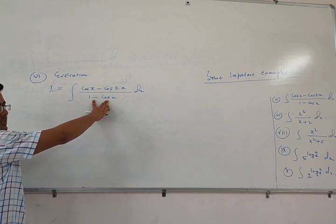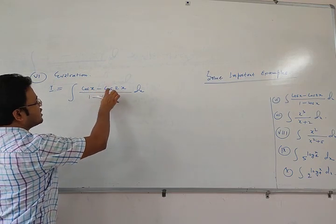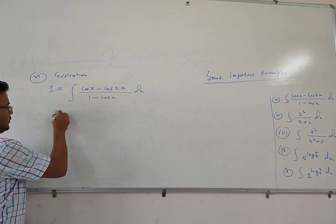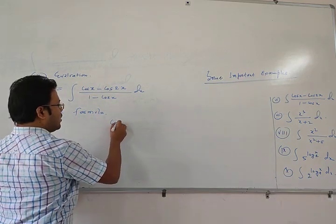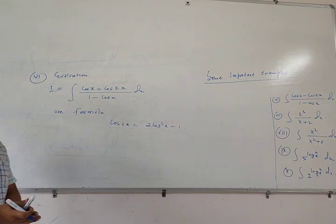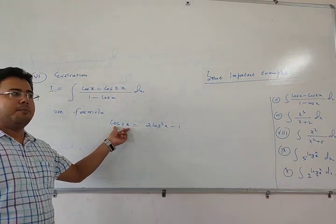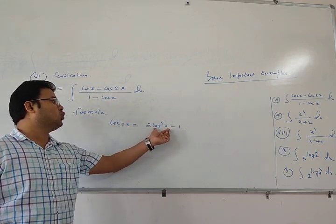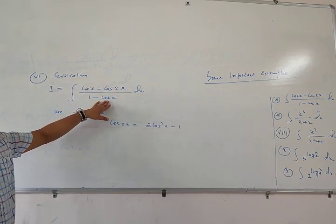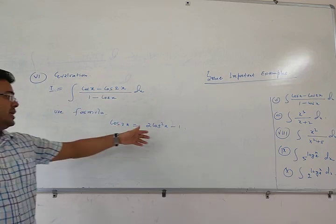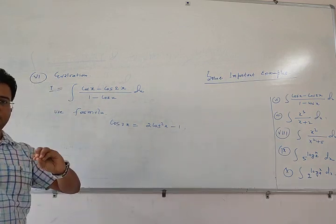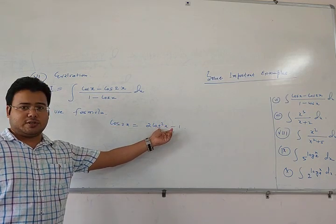Here the denominator is 1 - cos x and the numerator is cos x minus cos 2x. We can use the formula cos 2x equals 2 cos² x - 1. There are lots of formulas for cos 2x, but here we use this formula in terms of cos x because the denominator is in the form of cos x.